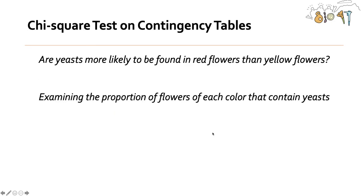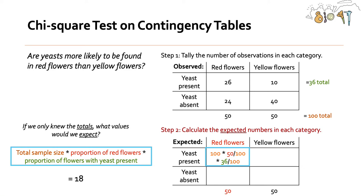So we can guess that by doing this calculation where we multiply the total sample size by the proportion of red flowers, by the proportion of flowers with yeast present. So that's this calculation. And when we do that, we get 18.